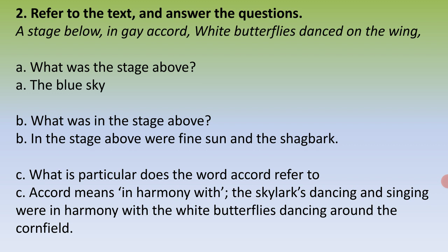Exercise number two: answer the following questions with reference to context. A line has been taken from the poem — 'A stage below in gay accord, white butterflies danced on the wing.' What was the stage above? The blue sky was the stage above. What was in the stage above? In the stage above were the fine sun and the Skylark.